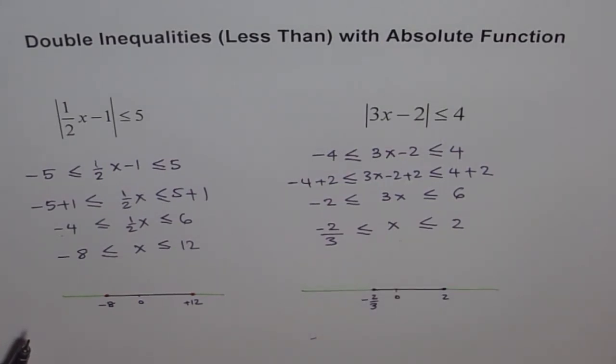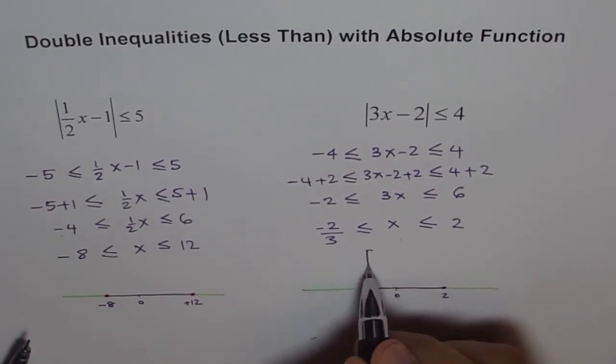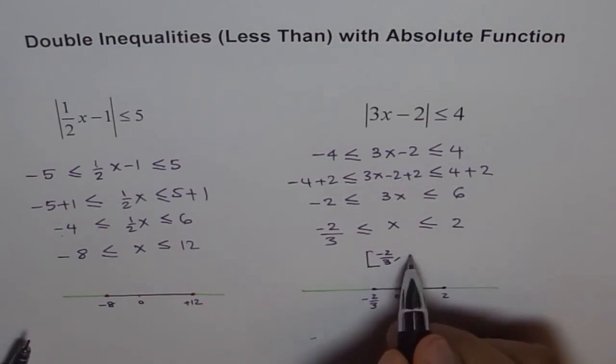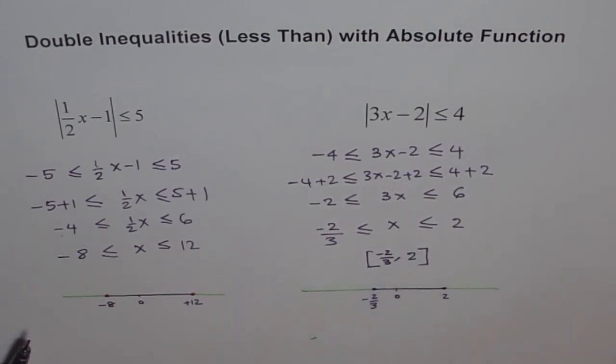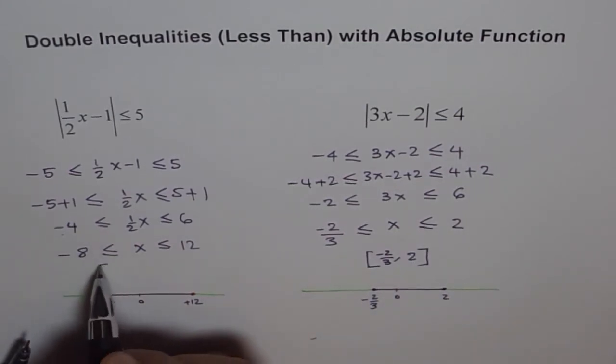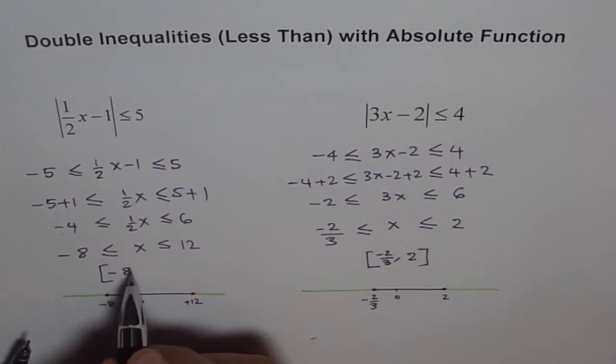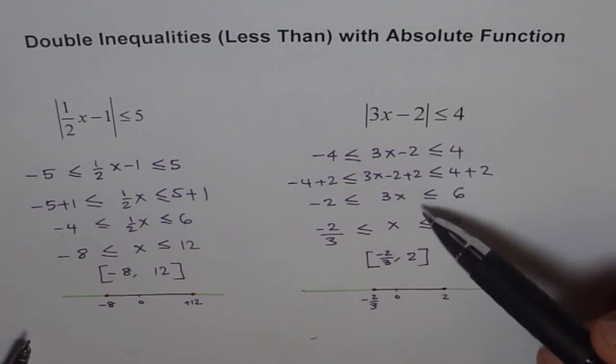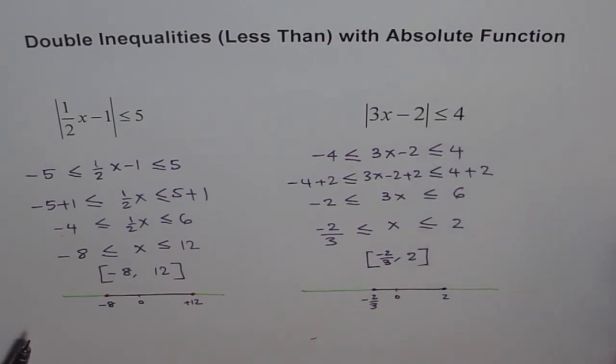In bracket form also, we can write this answer and in bracket form, the answer will be including minus 2 over 3, and up to 2. So, that is in bracket form. Here also, we can write in bracket notation which is from minus 8 to 12. So, that's how we do inequalities which turn out to be a double inequality when we do for absolute functions.